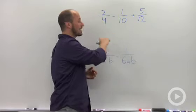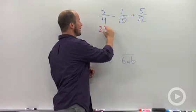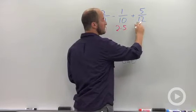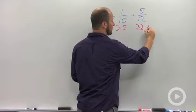So by doing that, we'll do this example up here. 4 is 2 times 2, 10 is 2 times 5, and 12 is 4 times 3, or 2 times 2 times 3.